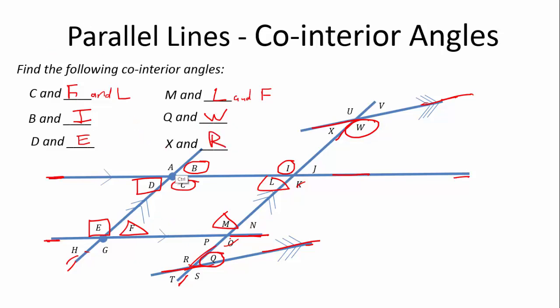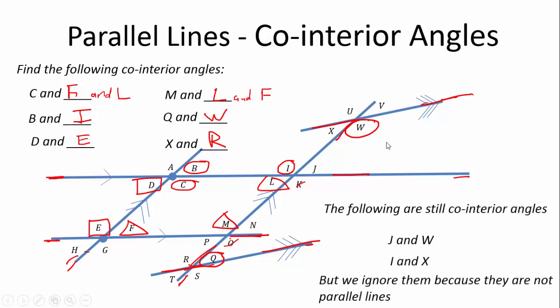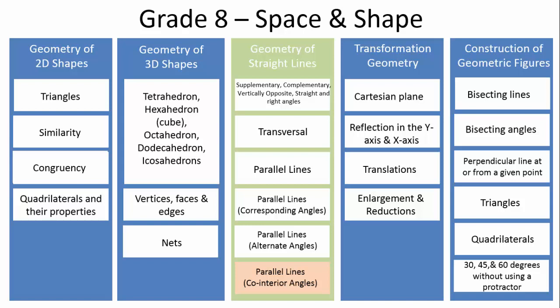Great. That is the section on co-interior angles. I just want to mention that J and W, for example, here and here, they are still co-interior angles, even though this is not parallel to this. But we can ignore them now because they're not on parallel lines. So, we just ignore them for now. But they are co-interior angles by definition, but not in parallel lines. So, well done, gradates. That's all for geometry of straight lines for co-interior angles.